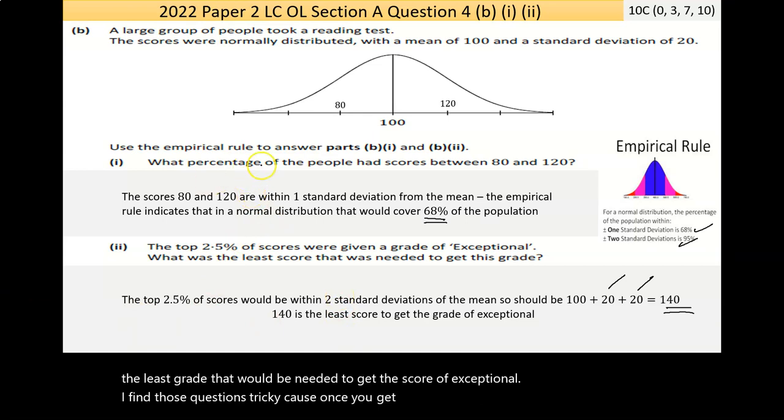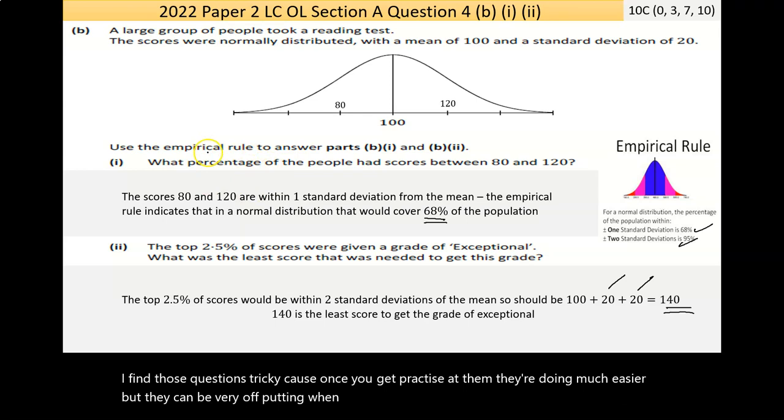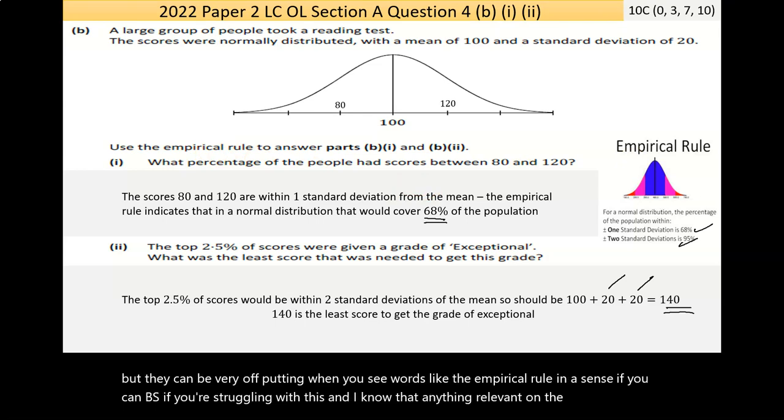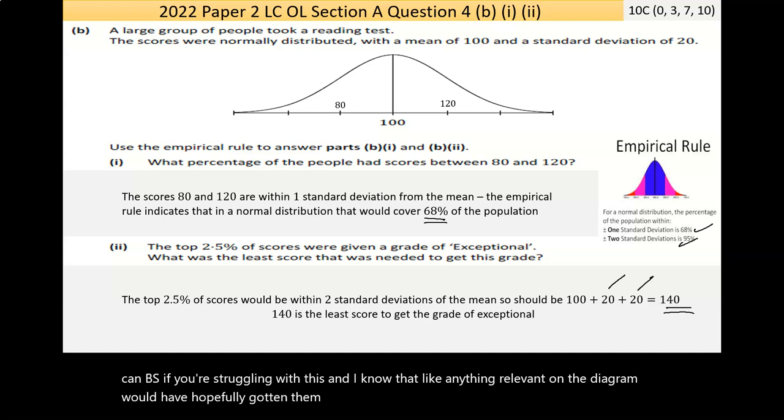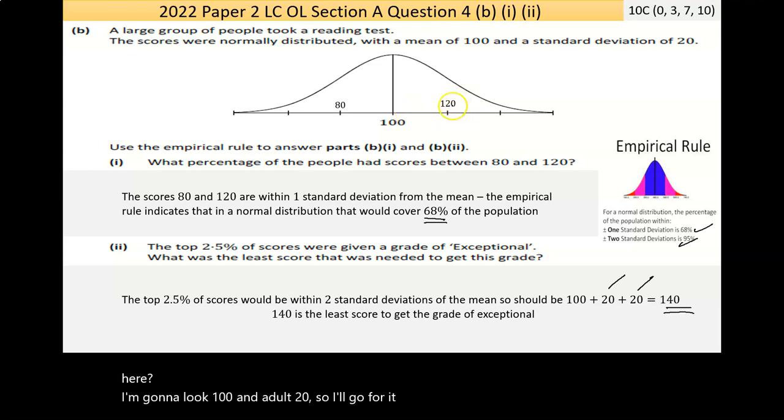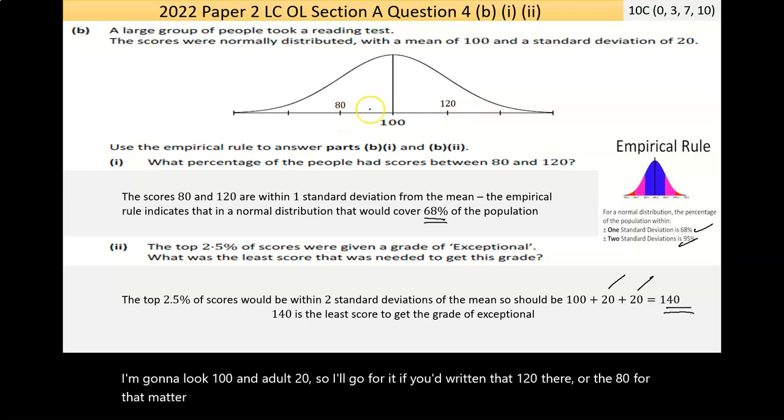I find those questions tricky because once you get practice at them they're much easier, but they can be very off-putting when you see words like the empirical rule. If you're struggling with this and you can write anything relevant on the diagram, that would have hopefully gotten a mark. If you'd written that 120 or the 80, you would have gotten the low partial of three marks, and in a question you're struggling with, that's better than nothing.